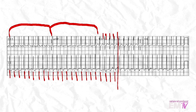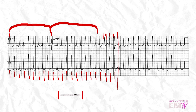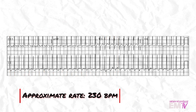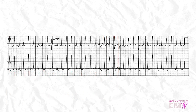I'll count my R waves and get my rate. I'm counting 23 R waves, which gives us an approximate rate of 230 BPM. The next thing I'll do is try to identify any P waves. Unfortunately, there is a lot of artifact and baseline wander in lead 2, so I will use leads V3 and V6 to help me identify these P waves and the R-to-R interval.